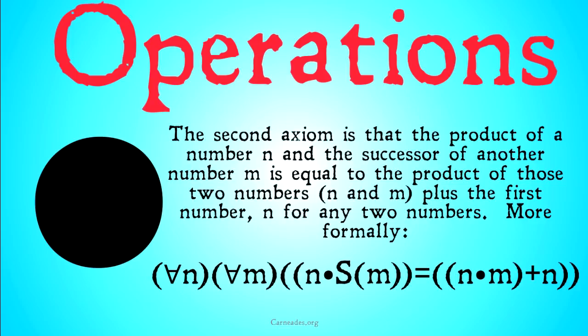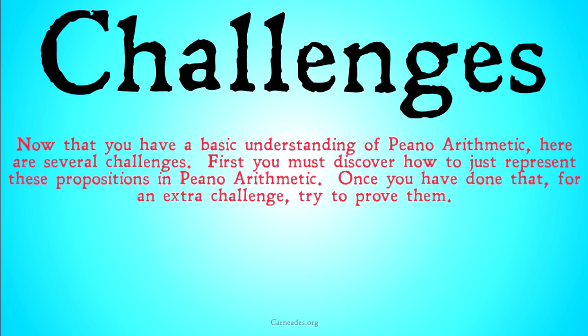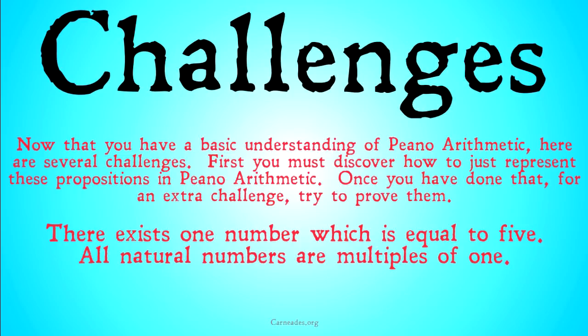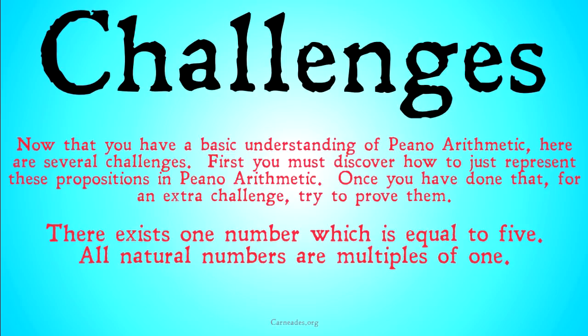Now that you have a basic understanding of Pinot arithmetic, here are several challenges. The first challenge is for you to discover how to represent these propositions in Pinot arithmetic — it sounds easy but it's actually quite difficult. For an extra challenge, try to prove them and offer your solutions in the comments below. The challenges are: one, there exists one number which is equal to five; two, all natural numbers are multiples of one; three, it is not the case that all natural numbers are even; and four, a difficult challenge — there exists some number which is a power of three, meaning three, nine, twenty-seven, eighty-one, and so on.